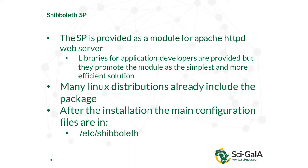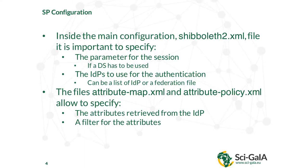With Linux it's easier because it's already packaged. When you open the configuration folder of Shibboleth SP, the most important file to look at is shibboleth2.xml, where you configure the session, the lifetime, and the trusted IDP or federation. The other two relevant files are the attribute map and the attribute policy, where you specify which attributes you accept from the IDP and apply filters for authorization according to the attribute.